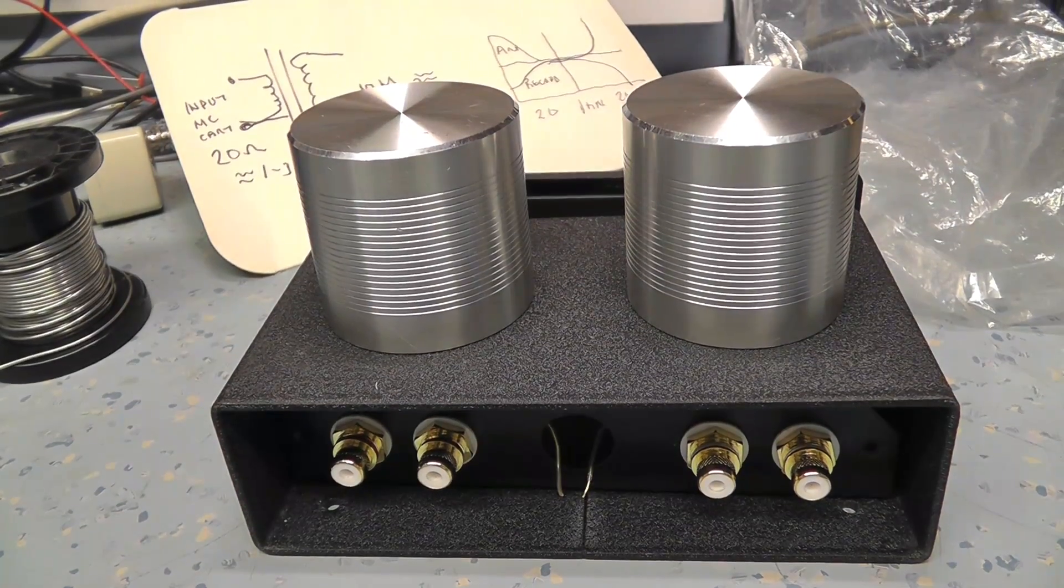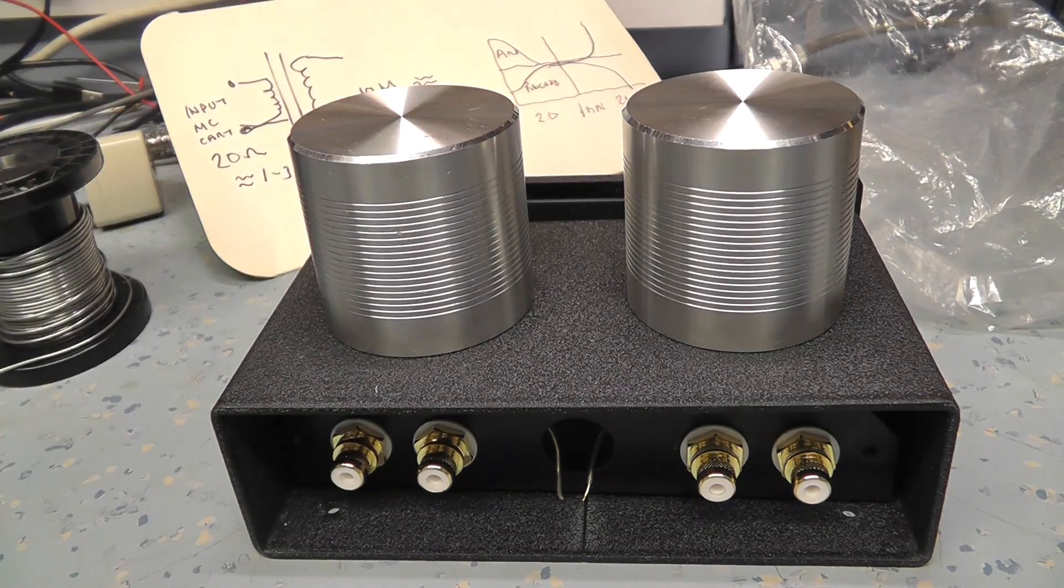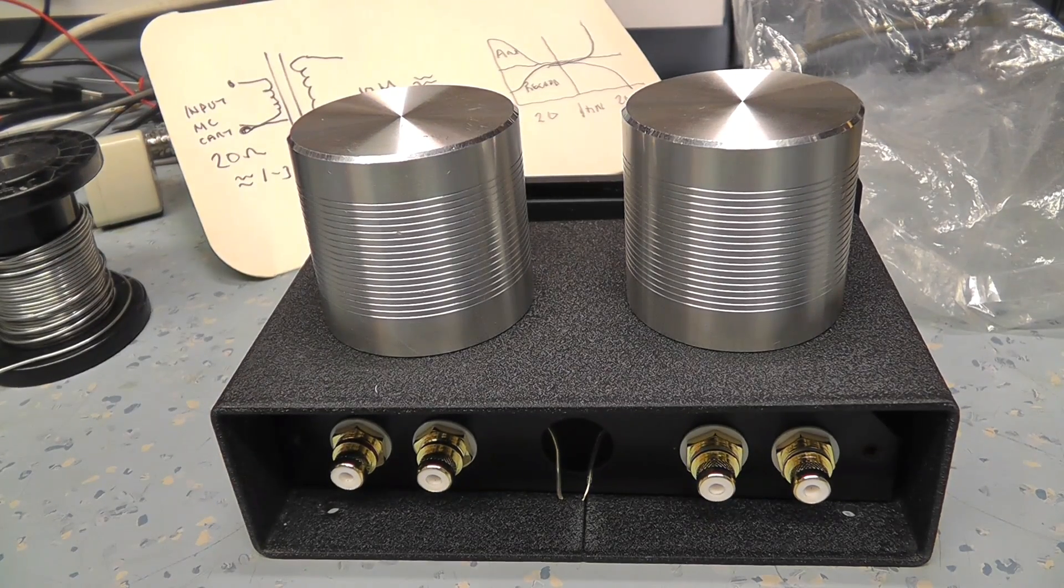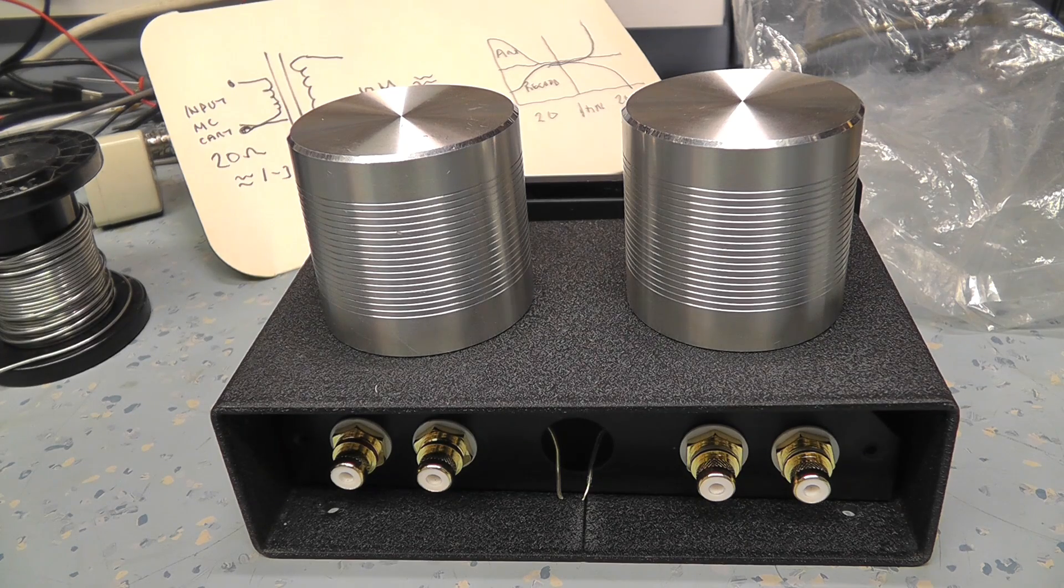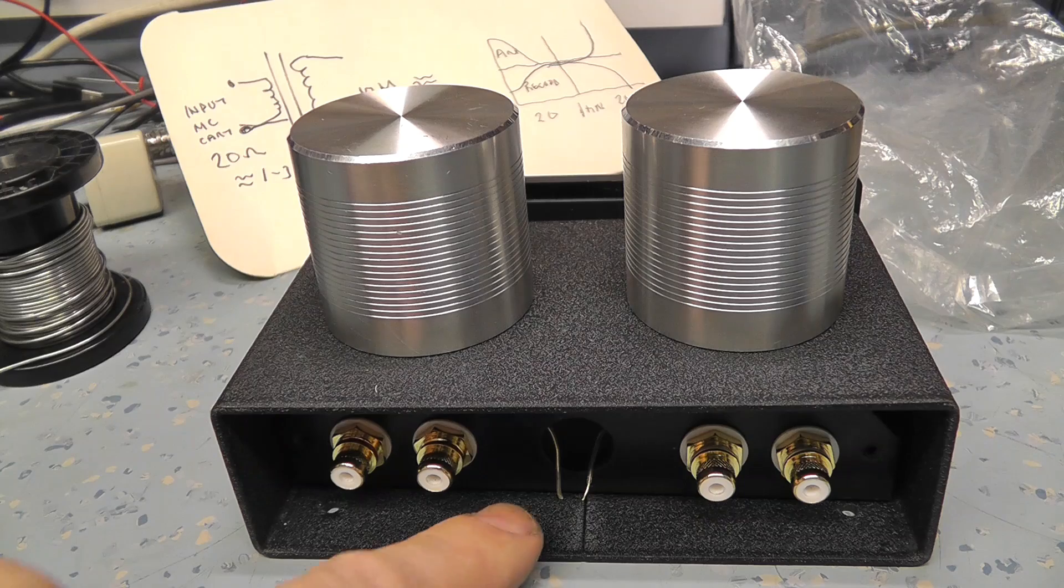Okay. They're the sort of finials that hold the transformer in place. These two aluminium, turned pieces of aluminium, basically anodized aluminium. Continuity is good.